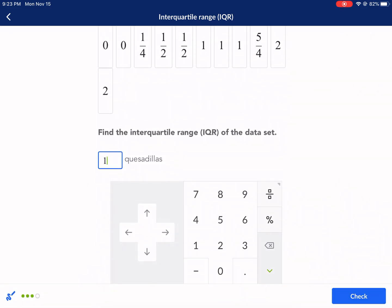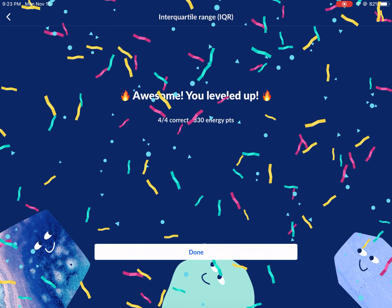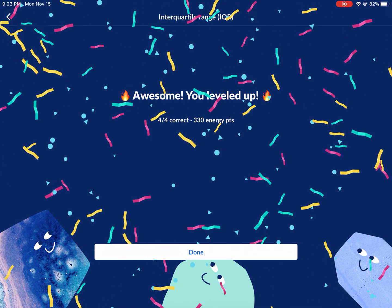So one quesadilla is the interquartile range. The middle 50% was within one quesadilla of each other. And that's it. That's the interquartile range IQR. Hope you enjoyed this video.